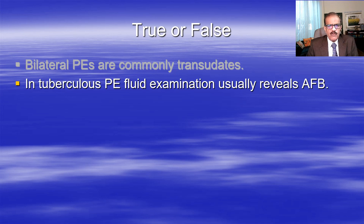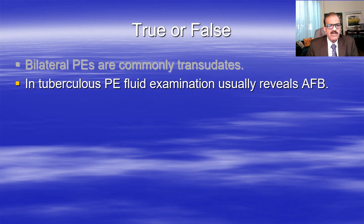In tuberculosis pleural effusion, fluid examination usually reveals AFB - acid-fast bacillus, the same as Mycobacterium tuberculosis. What do you think - would you be able to see AFB in all cases of tubercular effusion? No - only in 10% of cases, because mycobacterium stays within the granuloma and the effusion is just a hypersensitivity reaction. Mycobacterium is usually not seen in pleural fluid, although molecular tests like mycobacterium DNA and GeneXpert can detect remnants of the bacterium in the fluid.